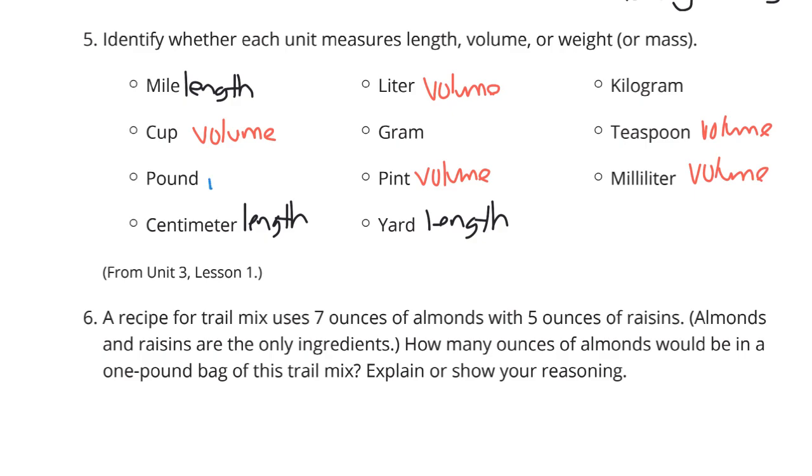Pound is a weight or mass. Gram is a weight or mass. And kilogram is a weight or mass.